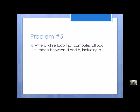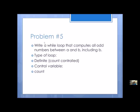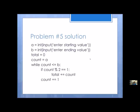Problem number five: write a while loop that computes all odd numbers between A and B, including B. Once I know A and B, I do know how many times this loop will execute — so this is a definite or count-controlled loop. The control variable is count, and the condition is count less than or equal to B, because it says 'include.' In the solution, I've got A as the starting value, B as the ending value, and a total. Count starts at A, I check the condition, and if it's odd I add it to the total. This isn't the only solution, but it's one that fits.